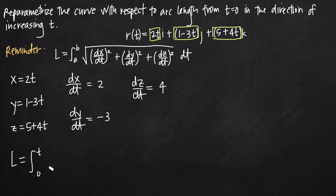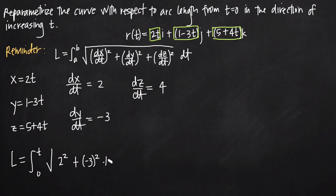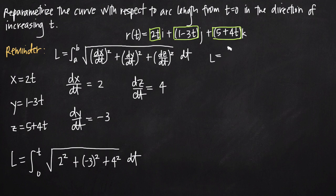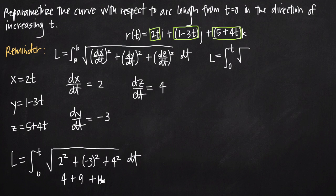With limits from 0 to positive t, we plug in our derivatives under the square root. We get the square root of 2 squared plus (negative 3) squared plus 4 squared, times dt. Simplifying: 2 squared is 4, negative 3 squared is 9, and 4 squared is 16. That gives us 4 plus 9 plus 16 equals 29, so we have the integral of the square root of 29 dt.